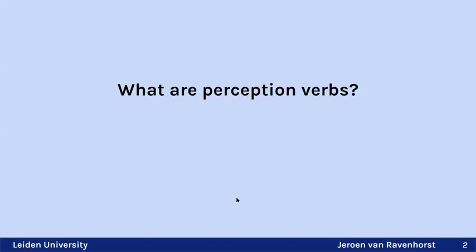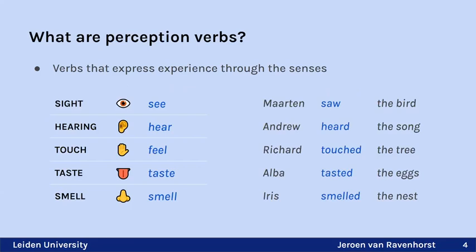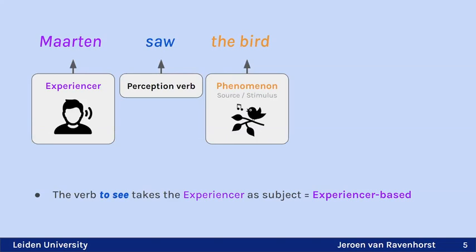Perception verbs are verbs that express experience through the senses. Here we have examples for five sensory modalities with corresponding verbs: for sight you have 'to see,' for hearing 'to hear,' and so on. What's important is that these verbs take a human experiencer as a grammatical subject.